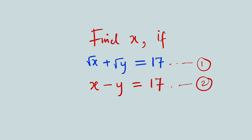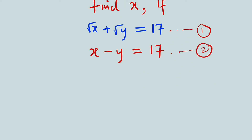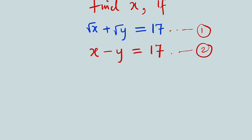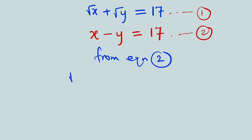Alright, let me start with equation 2 and simplify it a little bit. You know this x can be written as square root of x to the power of 2, because if you have this to the power of 2, that power of 2 will eliminate the square root leaving only x. So I want to transform x and y as square root of x to the power of 2 and square root of y to the power of 2, respectively. We have square root of x squared minus square root of y squared, and this is equal to 17.